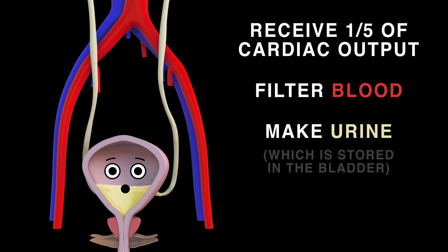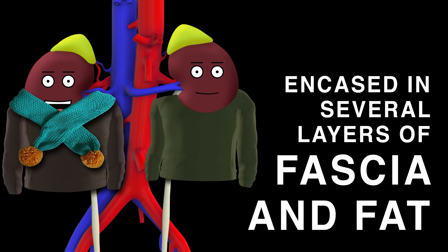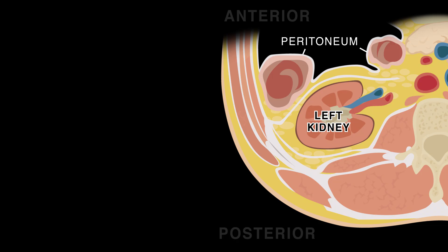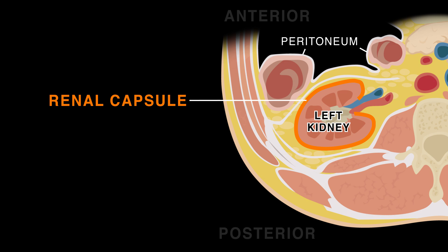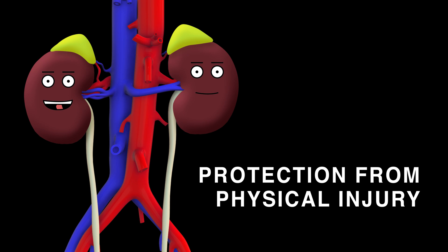We're encased in several layers of fascia and fat. There's a tough fibrous layer, the renal capsule right off the bat. Then the perirenal fat, or adipose capsule of the kidney, which provides us with protection from physical injury.